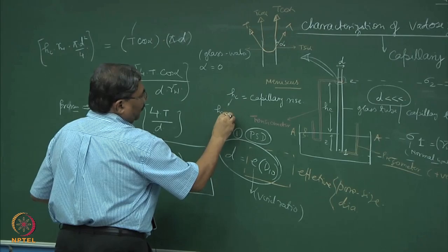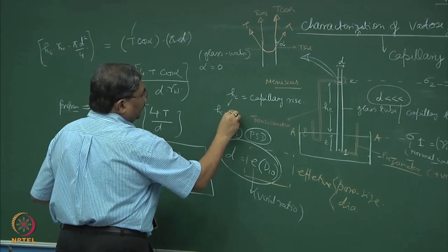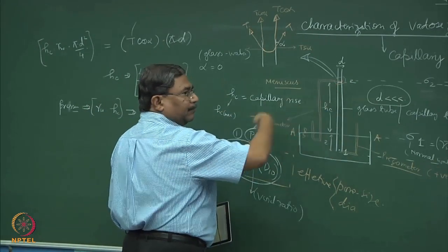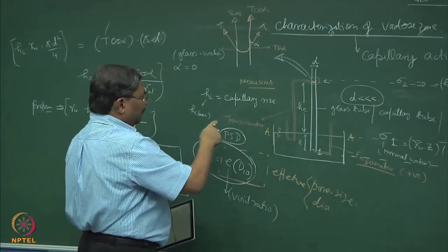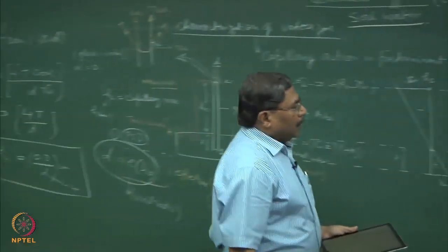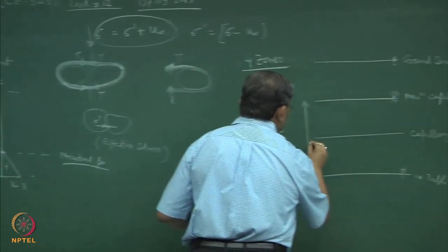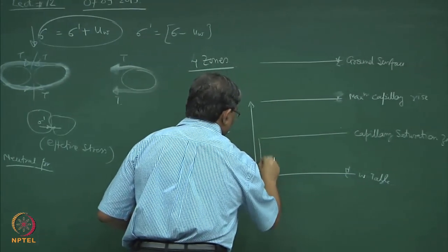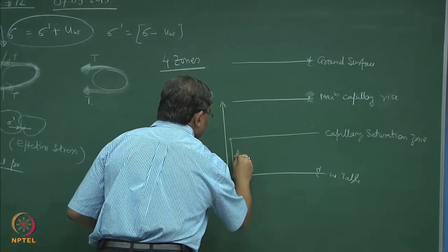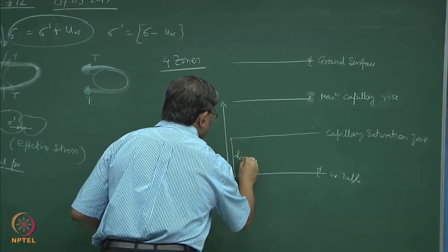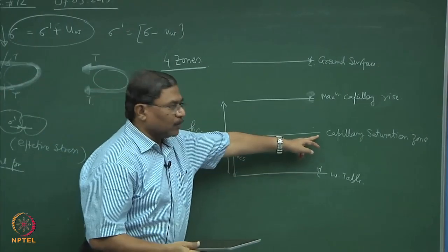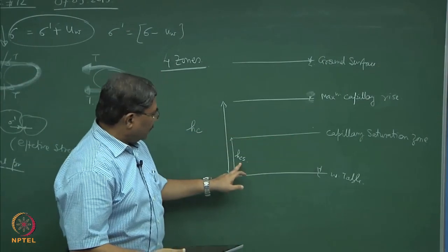I hope you can realize that this is the maximum possible height of water which can be in the tube. Normally I do not write Hc max. Instead, I will differentiate between the two by giving this as Hcs — capillary saturation zone.